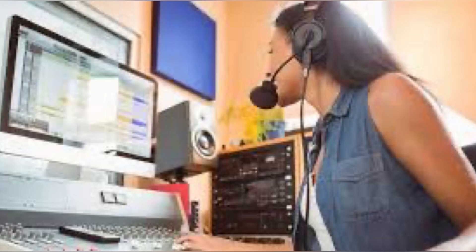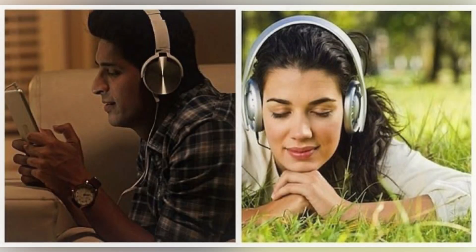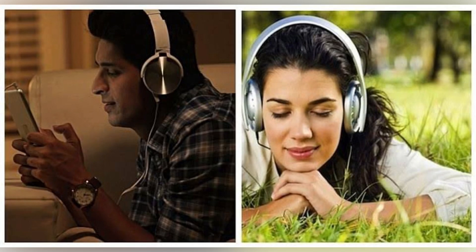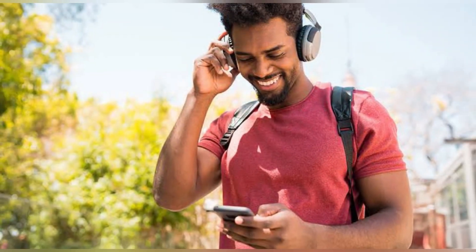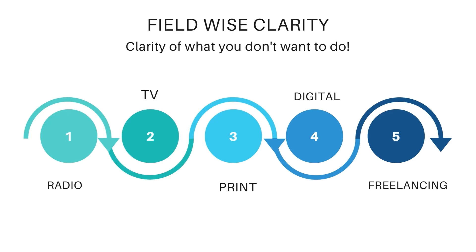In radio, entertainment includes many things like music, drama production, and other entertainment content. So you can see that radio has subdivisions: a news industry and an entertainment industry. You can then decide if you want to go into it or not. If you want to go, put a tick. If you don't want to go, put a cross. If it's optional, keep it as optional.